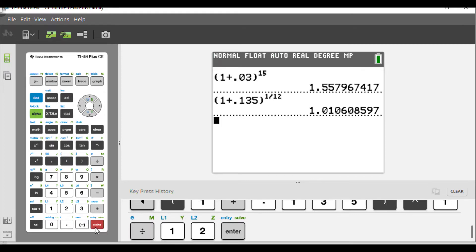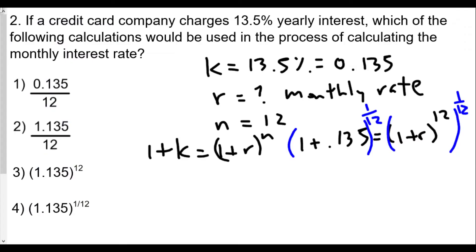So in this case, we will get 1.010608, which is equal to one plus r. And so we don't have to find these values. The question was, which of the following will be part of the process of solving? And we see in this case that the 1.135 raised to 1 over 12th is part of the process. And that's going to be choice four. We can solve for r. At this point, r would probably be about 1.1% monthly.